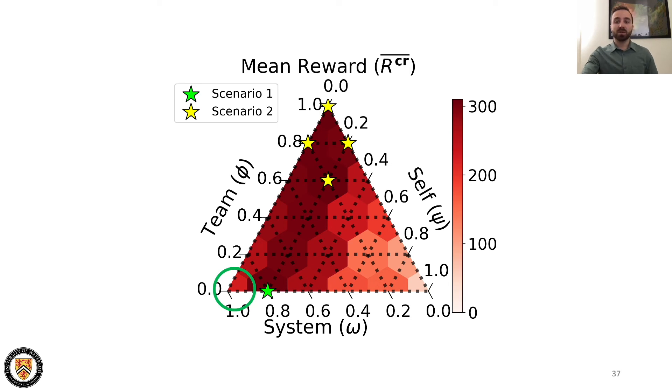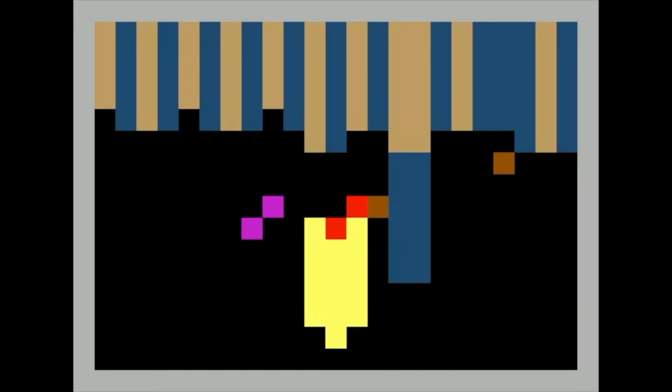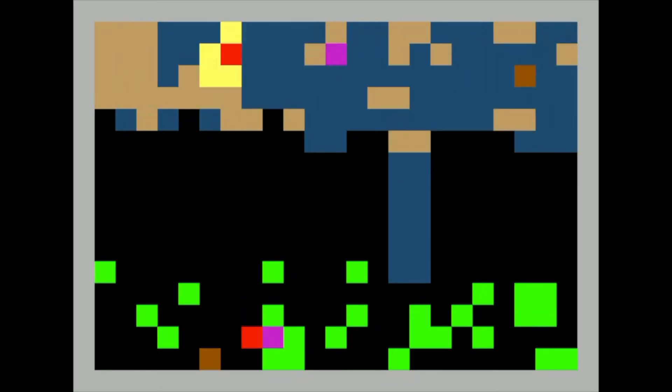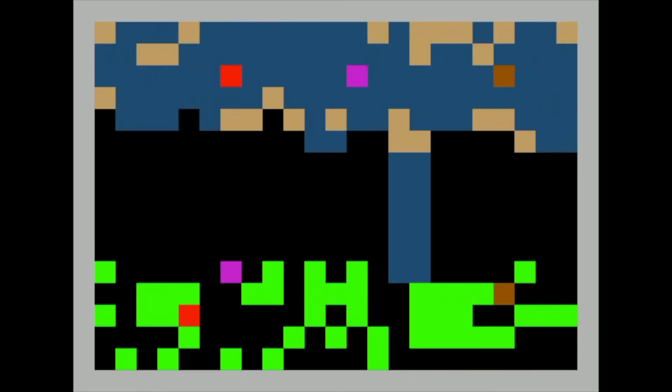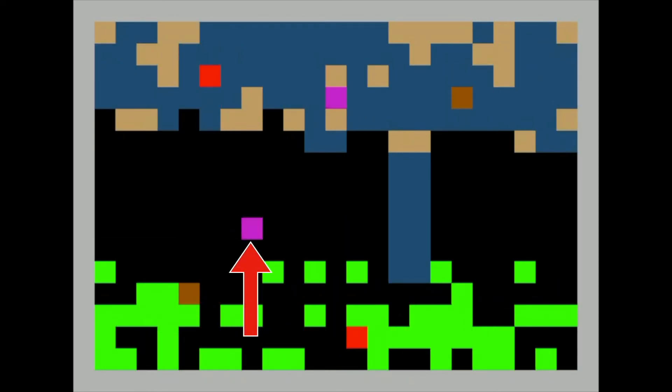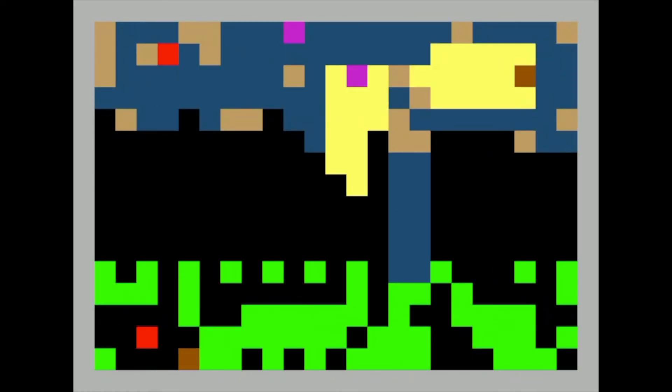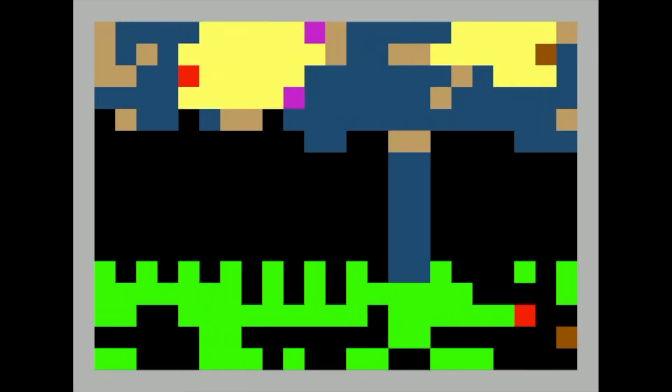Next up, we show the other extreme where agents are fully system-focused and are all optimizing for a shared cooperative reward. This fully cooperative scenario has previously been thought to achieve the highest reward in cleanup. We initially see the agents divide the labor so that three agents clean the river and three pick apples. Shortly after, one of the apple pickers transitions to clean the river, making a four cleaner and two picker split. This collective strategy does achieve higher population reward due to an abundance of apples being generated.